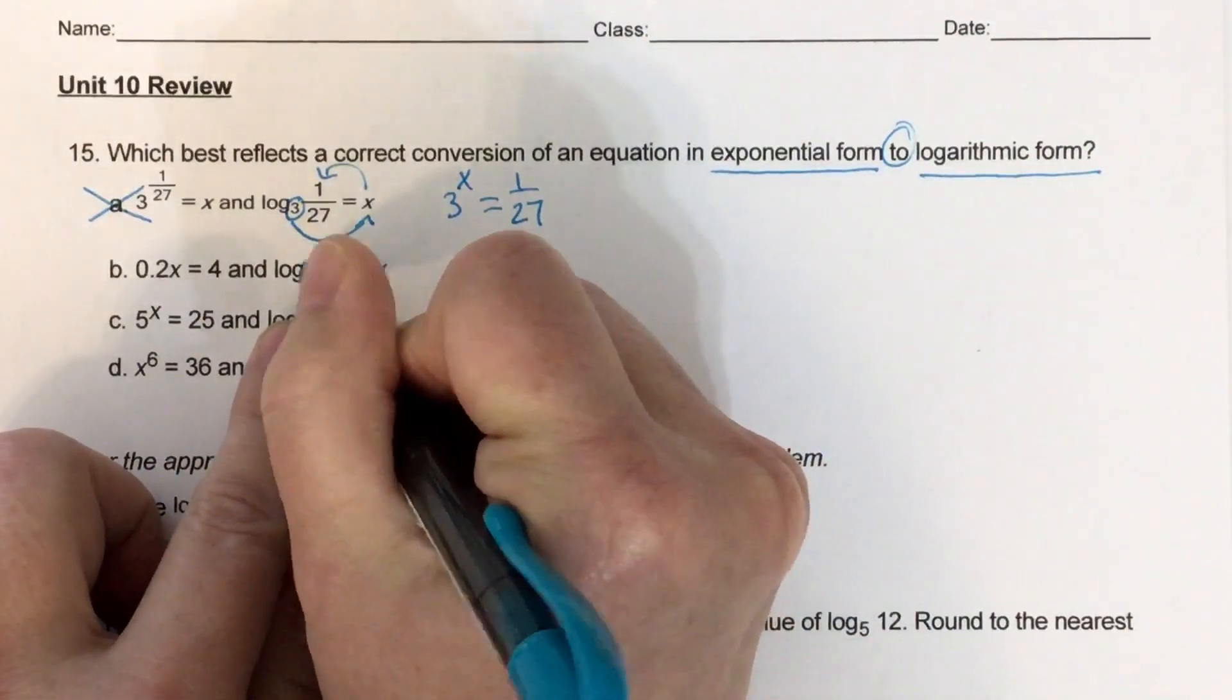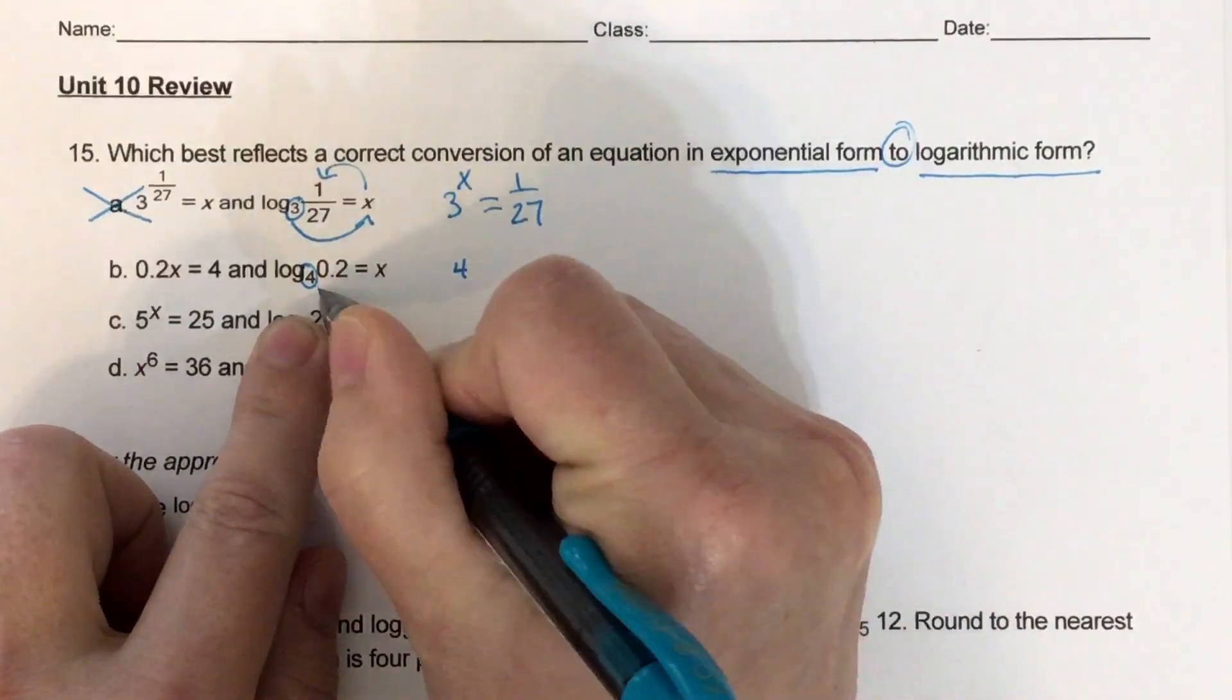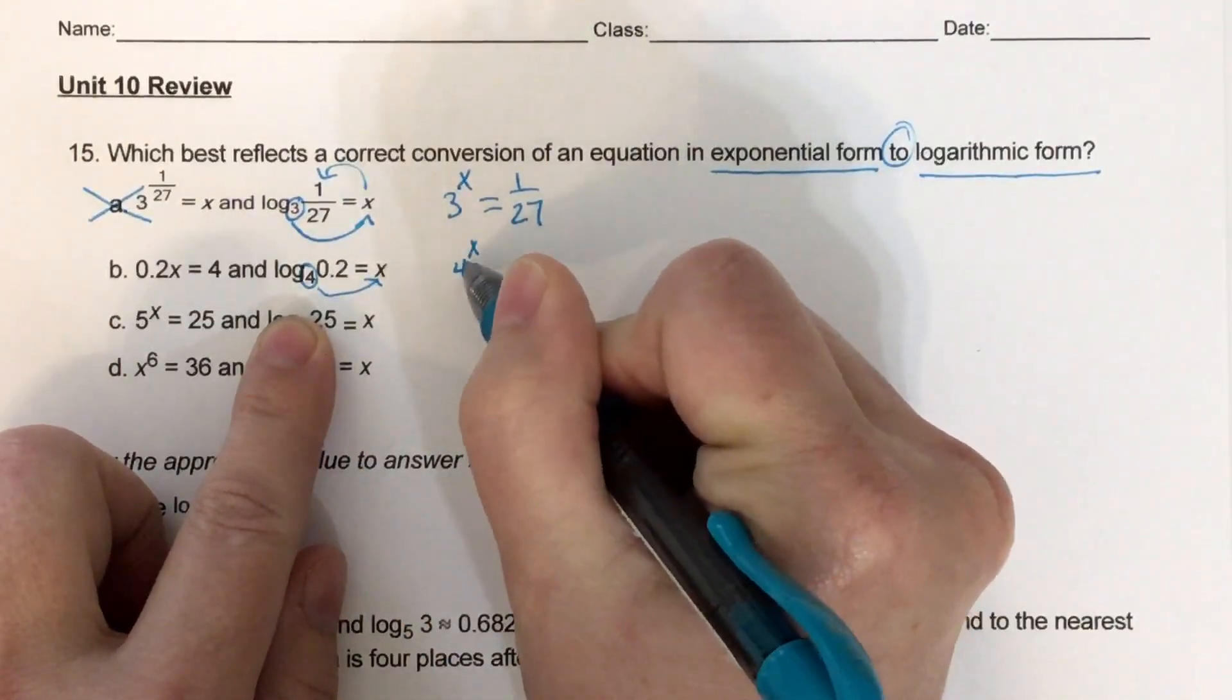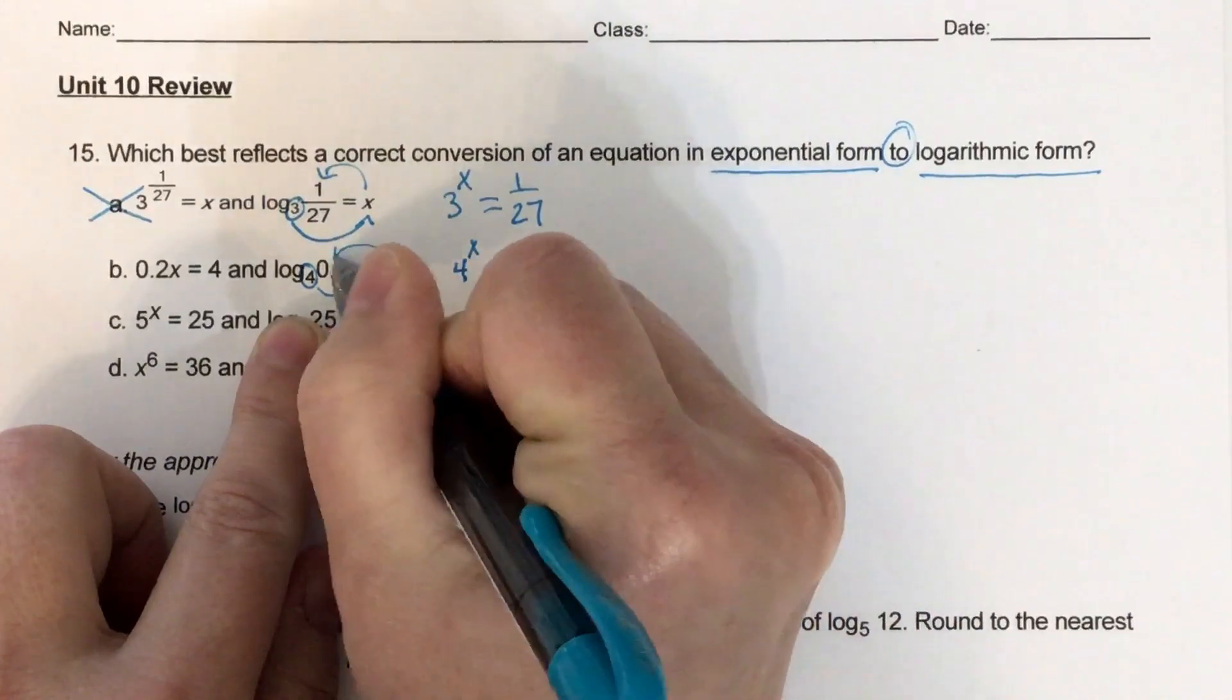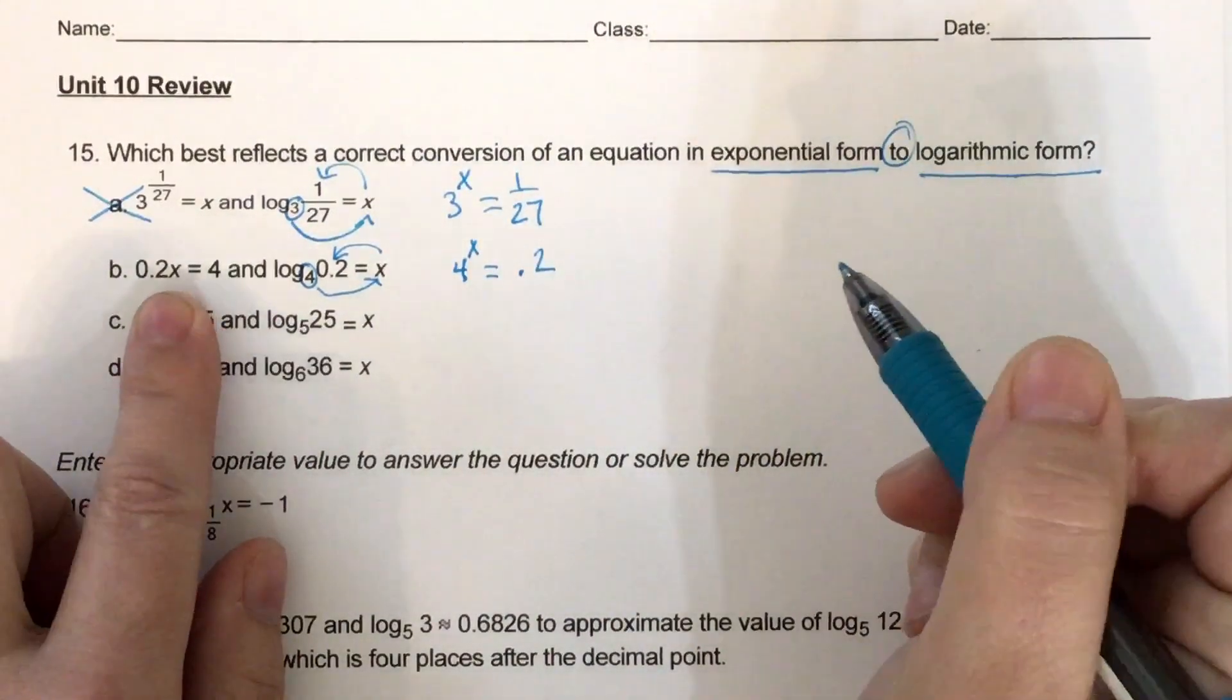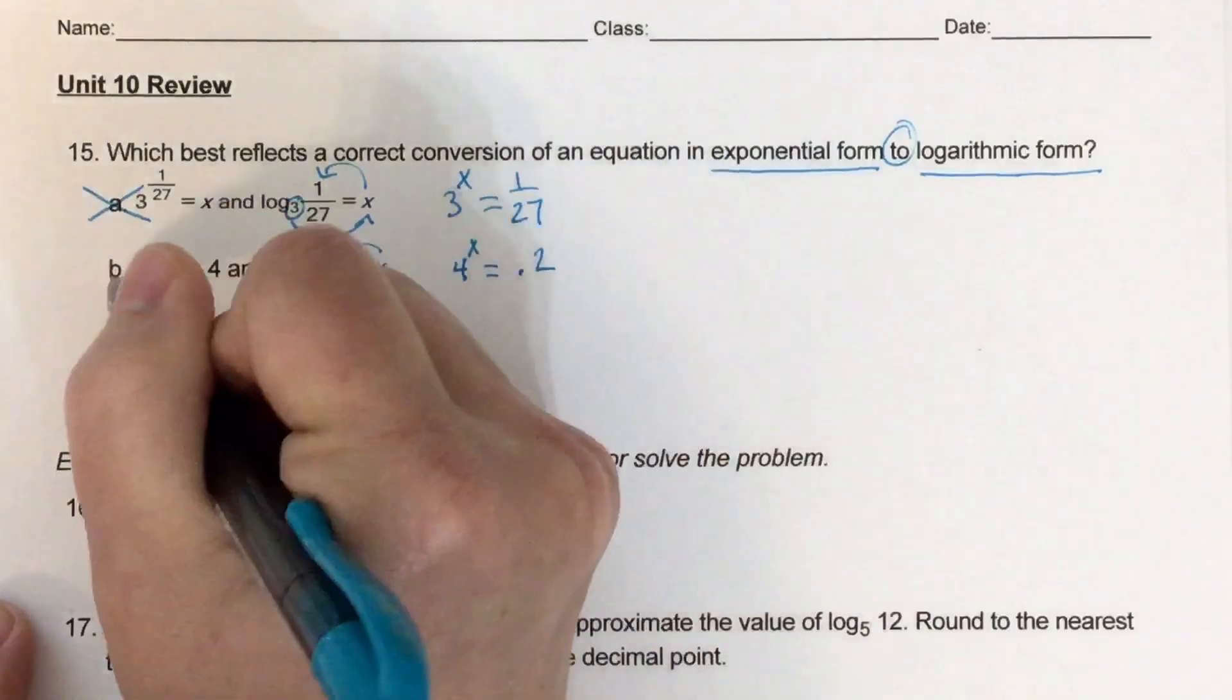Okay, I try it with B. 4 raised to the x equals 0.2, and then I see if that's what this said, and it doesn't, so it's not B.